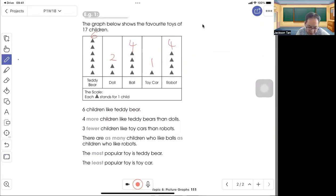And there are three fewer children like toy car than robot. Four minus one is three.